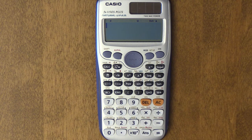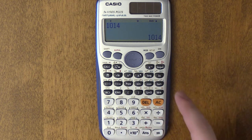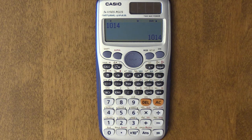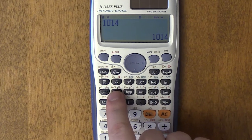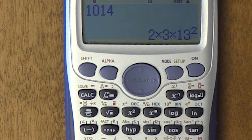This calculator also does prime factorization. If you wanted to factor 10,014, you type in equal, so now you have the answer. But you want to get the prime factorization of that answer. This works for anything, any answer you get. You type in shift, fact, and it'll give you 2, 3, and 13 squared. That's a prime factorization.